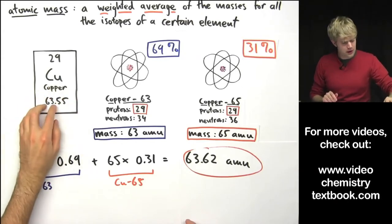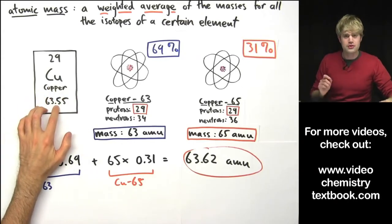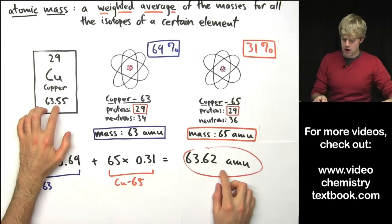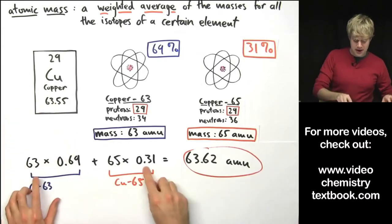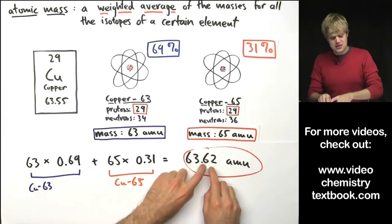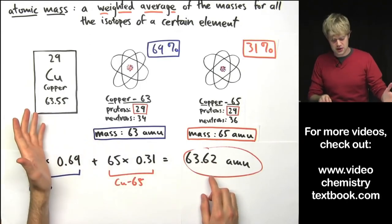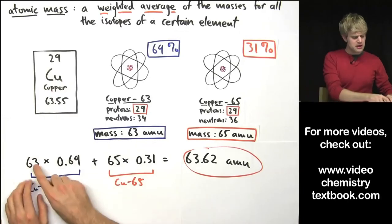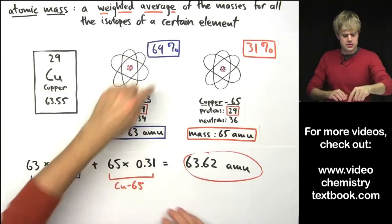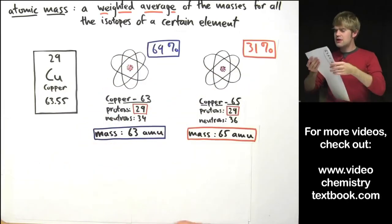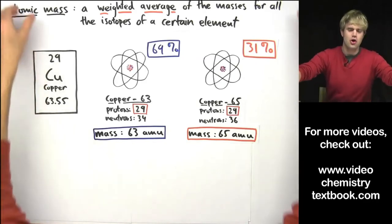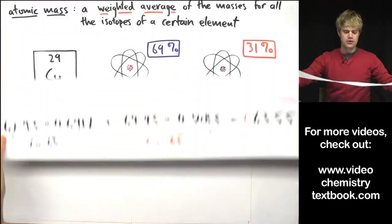I told you that this number here on the periodic table represents the atomic mass. You might be wondering why the atomic mass that I calculated here came out to 63.62 and not to the 63.55 that I see here. Well, the reason is because I took some shortcuts here. I used cleaner numbers so that it didn't confuse you as much when we were doing the calculations for the first time.